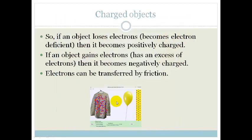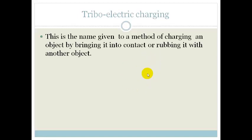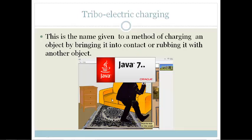Electrons are transferred by friction. This is called triboelectric charging. The name given to the method of charging an object by bringing it into contact or rubbing it with another object is called triboelectric charging. Let's look at this Java applet as well.